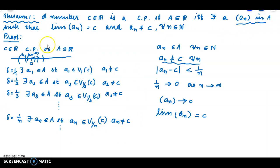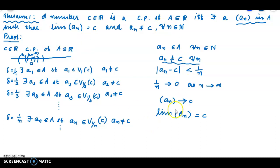Conversely, we assume that there exists a sequence (aₙ) in A such that limit of aₙ equals c and aₙ not equal to c for all n element of ℕ. Then we have to prove that c is a cluster point of A.